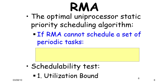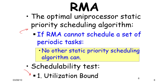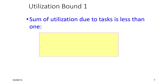The RMA algorithm is an optimal uniprocessor static priority scheduling algorithm. This means that if RMA cannot schedule a set of periodic tasks, then no other static priority algorithm can either. It has a bunch of schedulability tests, and RMA is the most optimal among all static priority scheduling algorithms.